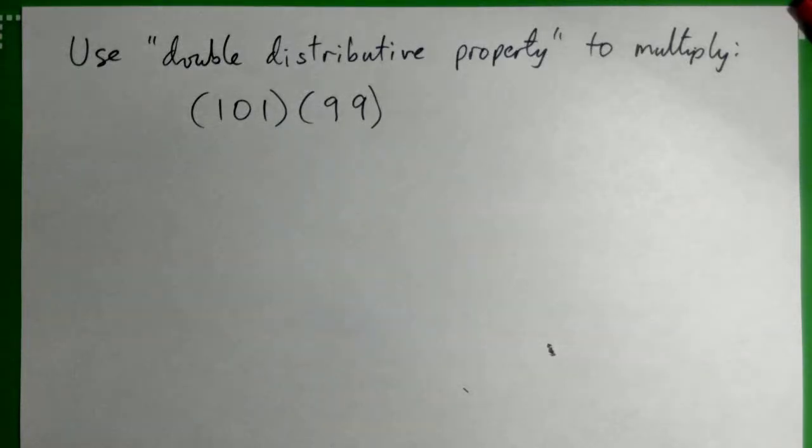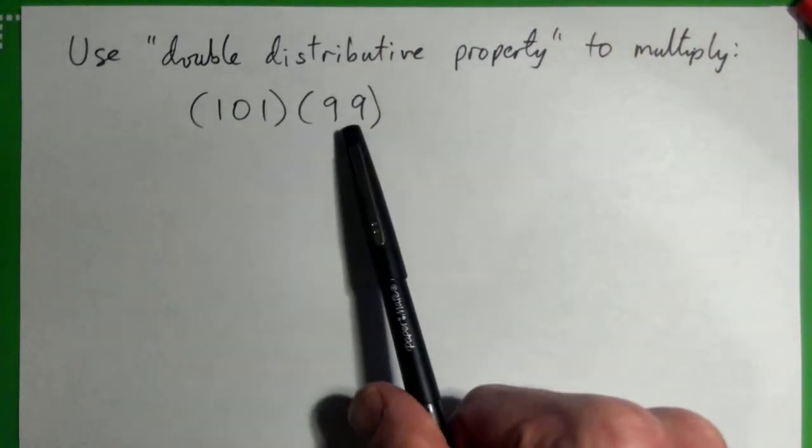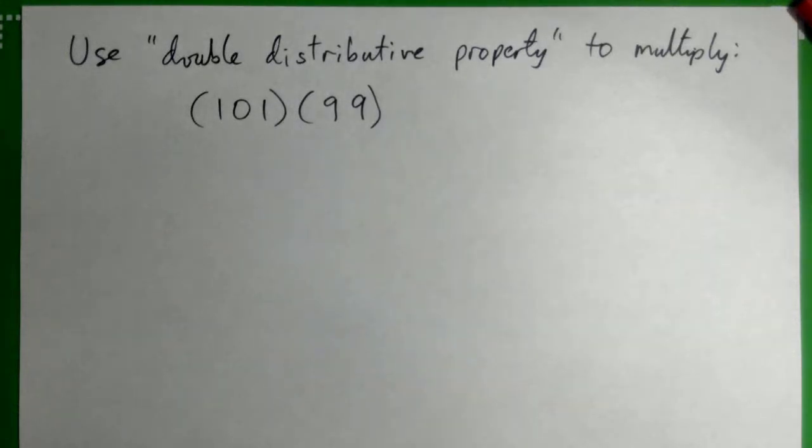Alright, so in this video we're going to use the double distributive property, or the difference of squares, to multiply this number times this number. Just to show that it really does work and get more of an understanding with something we understand, which is just multiplying two numbers together.